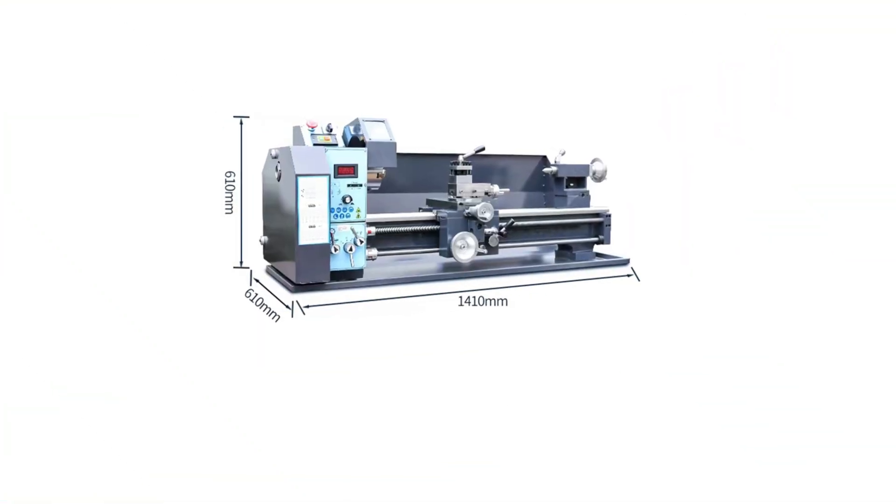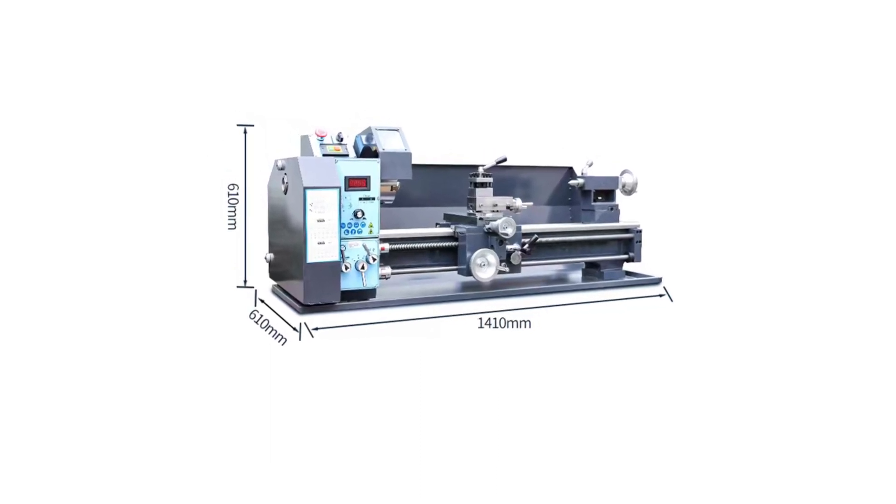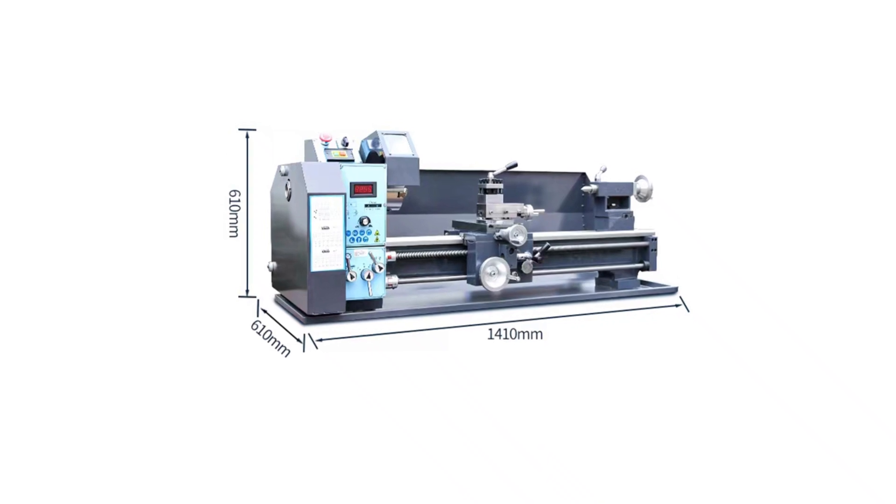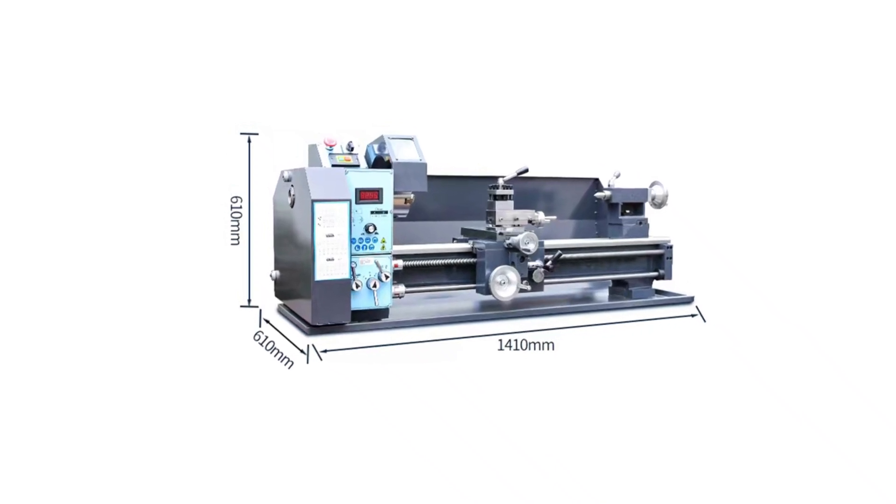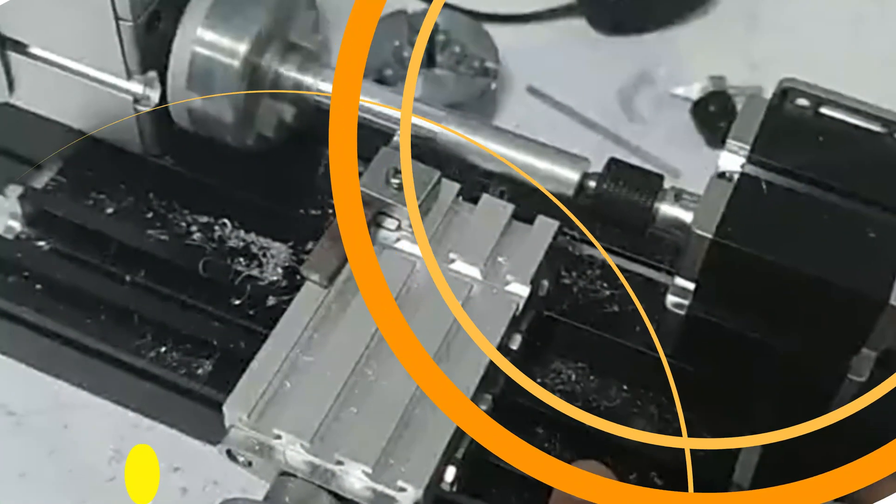The tailstock offers a 70mm sleeve stroke and an MT2 taper, providing additional support and stability. The Benflex 3080 is durable and stable, weighing 172 kg, making it a reliable choice for heavy machining projects.